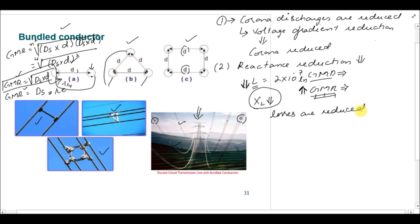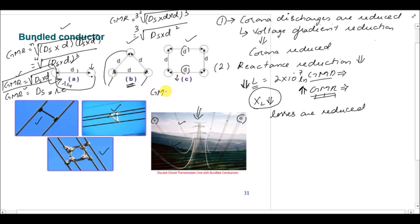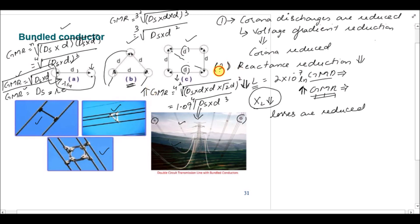Similarly for figure B (three-conductor bundle), GMR = (Ds × D × D)^(1/9) = ∛(Ds × D²). For figure C (four-conductor bundle), GMR = (Ds × D × D × D × D_diagonal)^(1/16), giving a final value of 1.094 × (Ds × D³)^(1/4). As the number of conductors in a bundle increases, the GMR value increases. This was the second advantage of using bundled conductors.